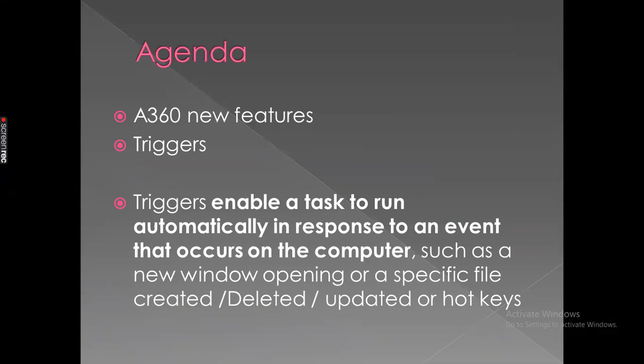First of all, let's learn what a trigger is. Triggers enable a task to run automatically in response to an event that occurs on your computer. For example, when a window opens or closes, a file is opened, created, deleted, updated, or modified, when you focus on a particular application, rename a specific file, close a window, receive an email, or delete an email. Based on the trigger on your computer, you can automatically run a bot.